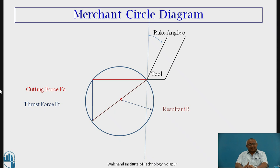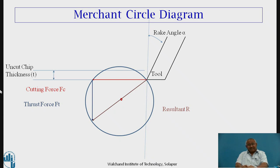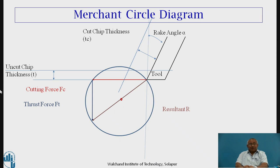Along with the merchant circle, we observe the cutting force and thrust force. Next, we draw a line representing uncut chip thickness with proper scale. Since uncut chip thickness is measured along the direction of tool travel, that line will be parallel to the cutting force. Chip always flows along the tool face, so the cut chip thickness Tc will be parallel to the tool face. These two lines intersect at a point, and through that point of intersection and through the tool point, we draw a line cutting the circle at a certain point.